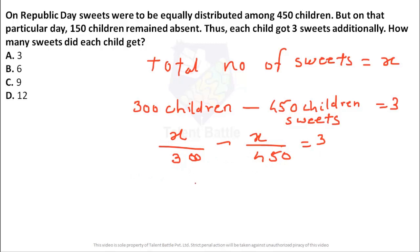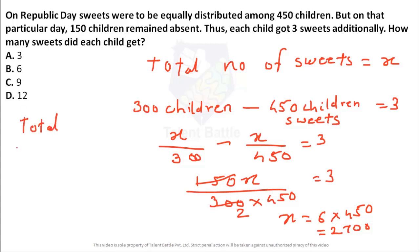So just calculate 450x minus 300x, this is 150x divided by 300 into 450 is equal to 3. So 150 into 2. So value of x will be 3 into 2, 6 into 450. 450 into 6 is nothing but 2700. So total number of sweets I can say is 2700, but that is not the question which they have asked. What they have asked, how many sweets did each child get? As you can check on that particular day 150 children remained absent. So total 450 children, out of that 150 remain absent means we are discussing about 300 children. So each child will get total sweets 2700 divided by 300. So each child will get 9 sweets on that particular day. So the answer for this question will be 9.